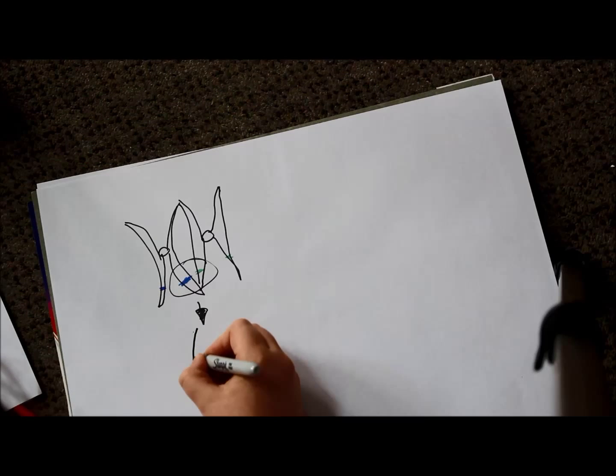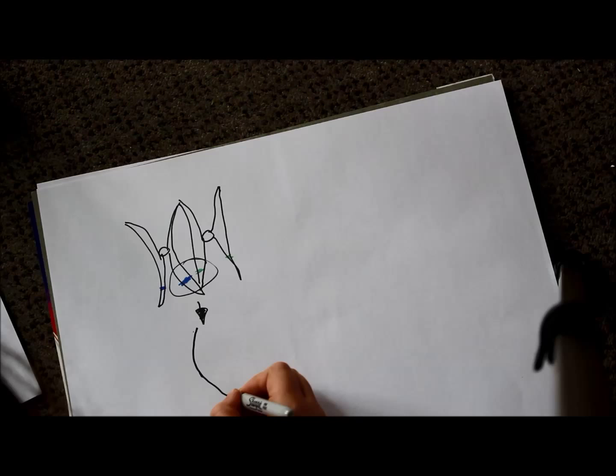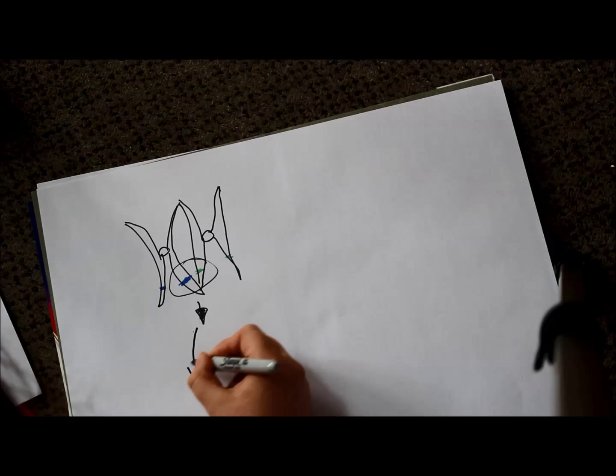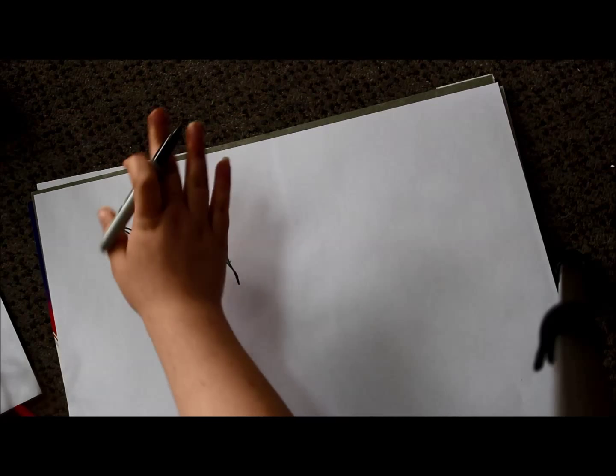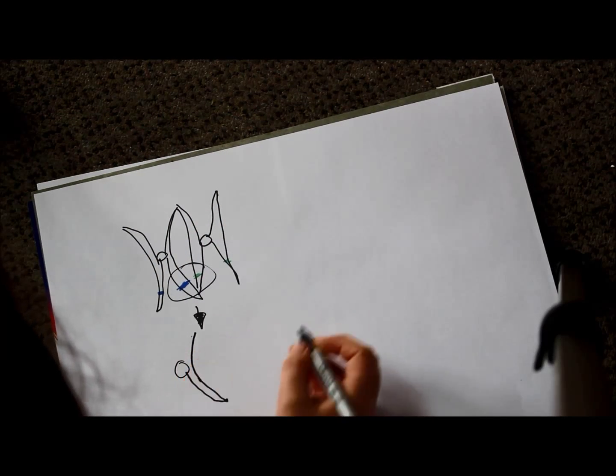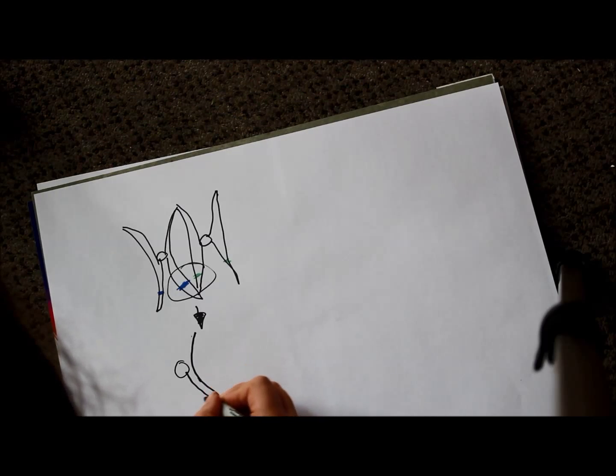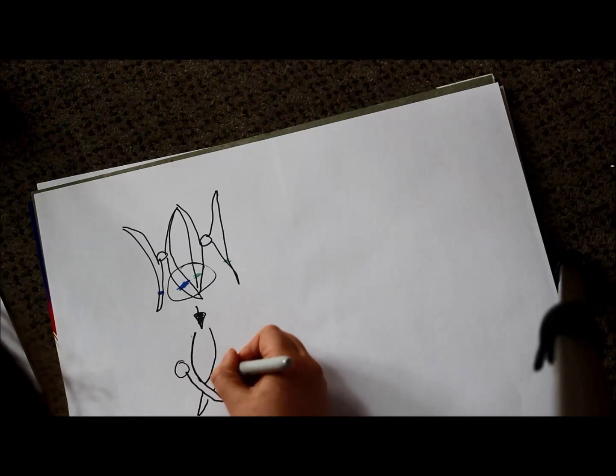This is where alleles of the same gene will literally cross over each other. This is called a homologous pair, these two chromosomes together. So, if you get two homologous pairs together, the genes that are the same will cross over like this.